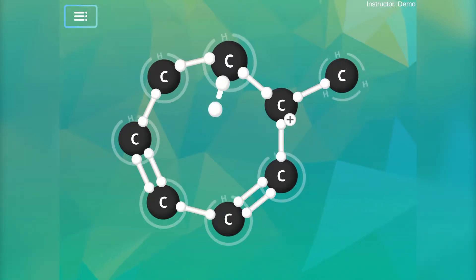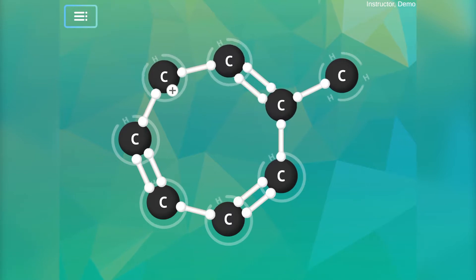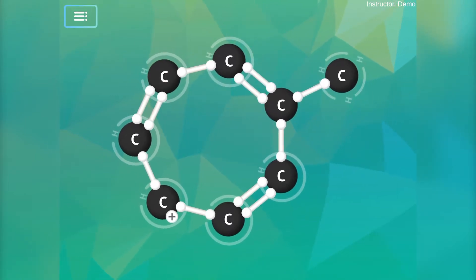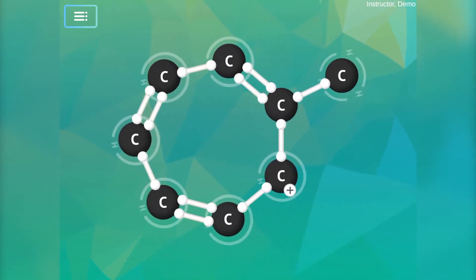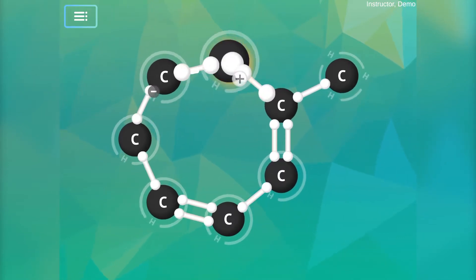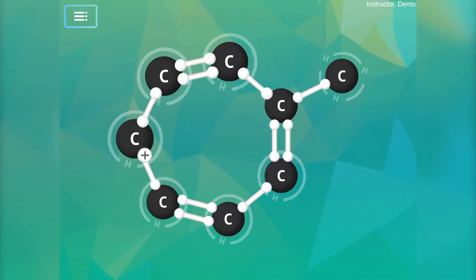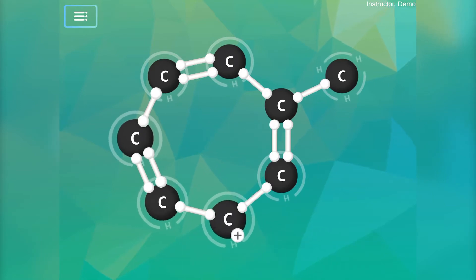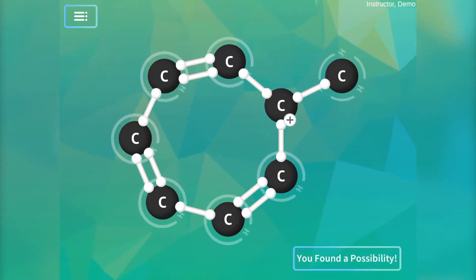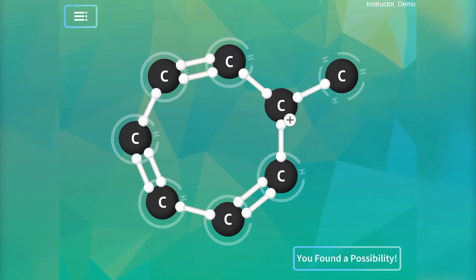A carbocation's empty p-orbital and the pi-bonds are all in the same plane. This alignment of orbitals allows for the delocalization of the electrons to stabilize the molecule by spreading the positive charge around the ring. Every carbon in the tropilium ion can have a positive charge in a different resonance structure.